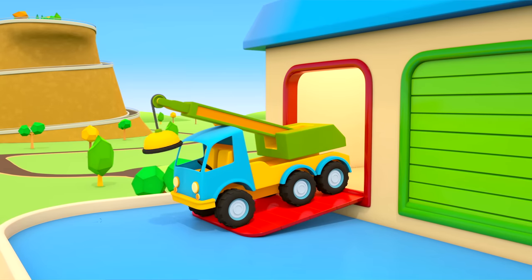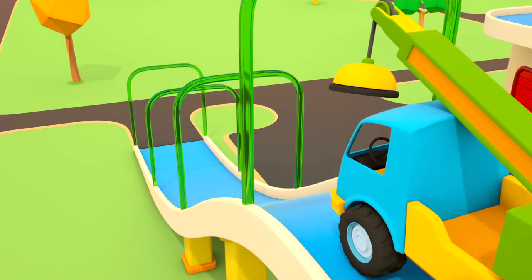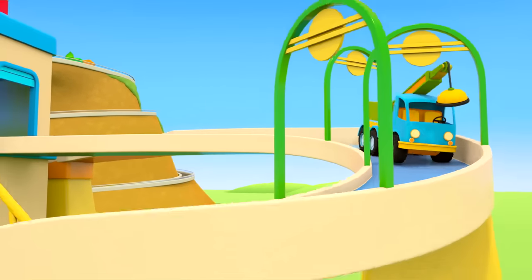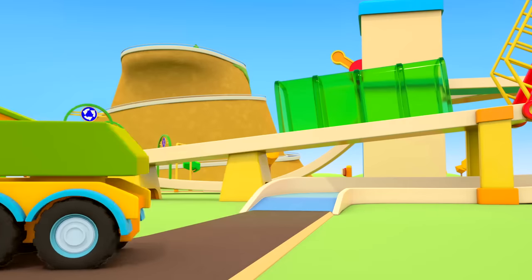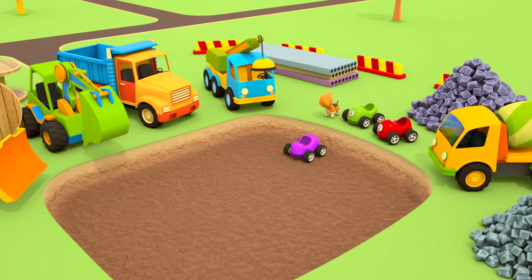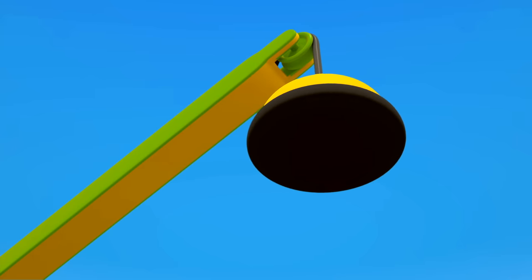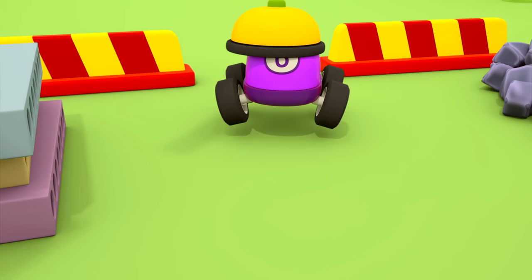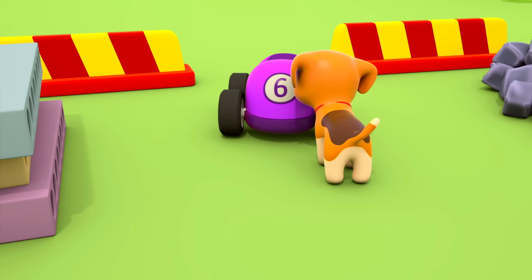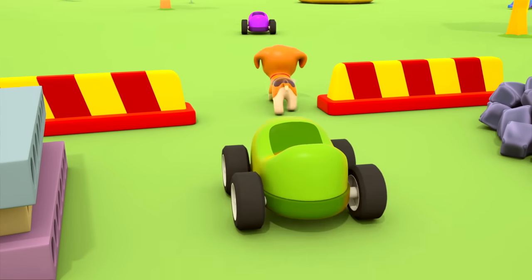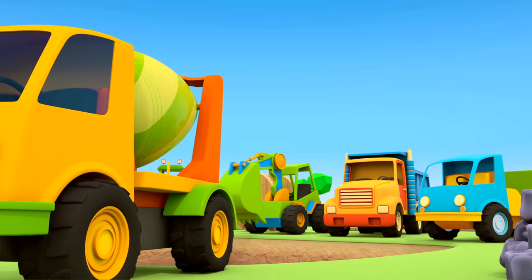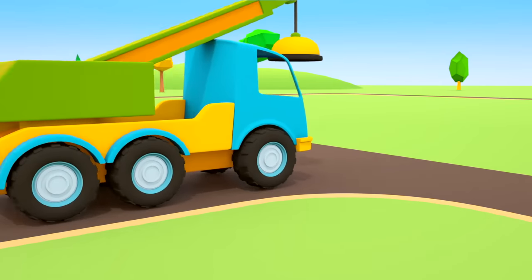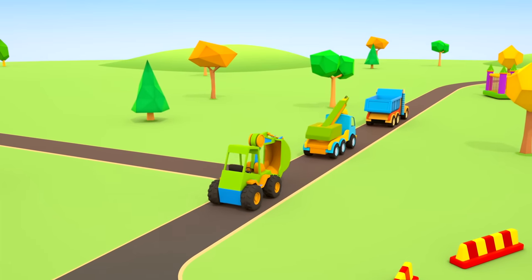The crane truck is leaving the garage. He'll also try to get the car out of the pit. Bring your arm out, crane truck, and bring your magnet down. Hurray, it worked! Little car, do not play hide and seek on the construction site anymore. Let's go to the playground. The helper cars are driving to their garage. Their work is done. Till next time, helper cars.